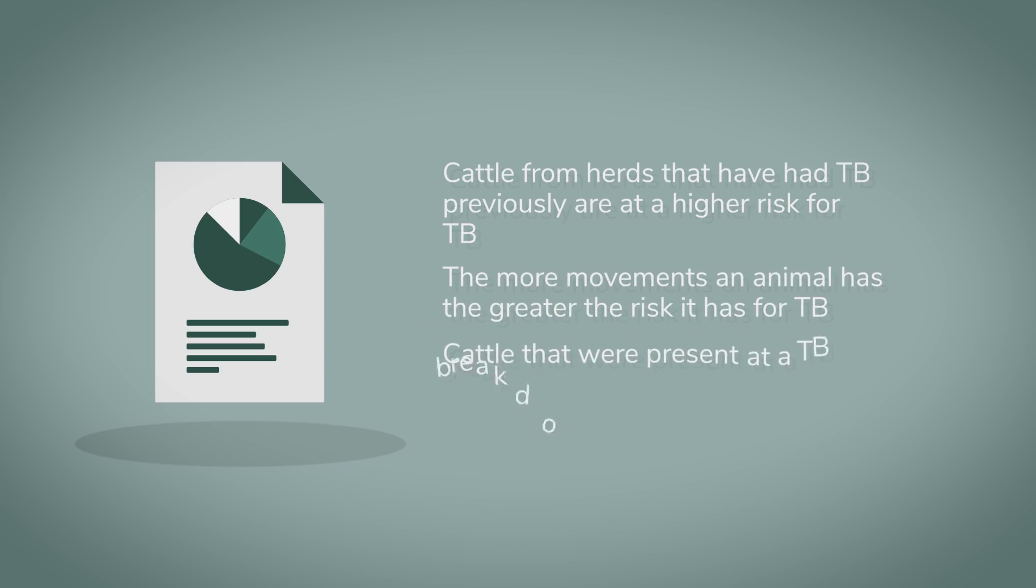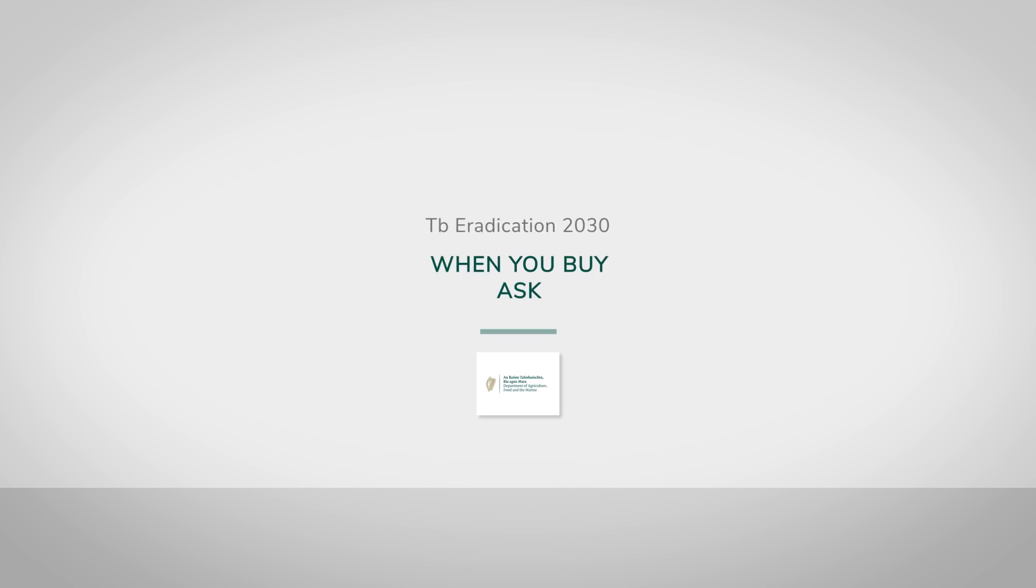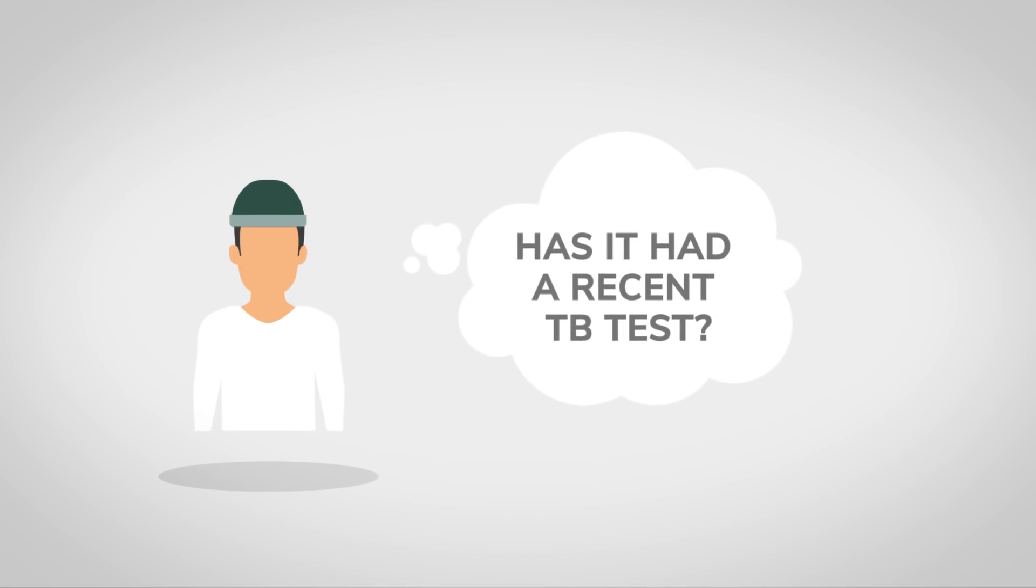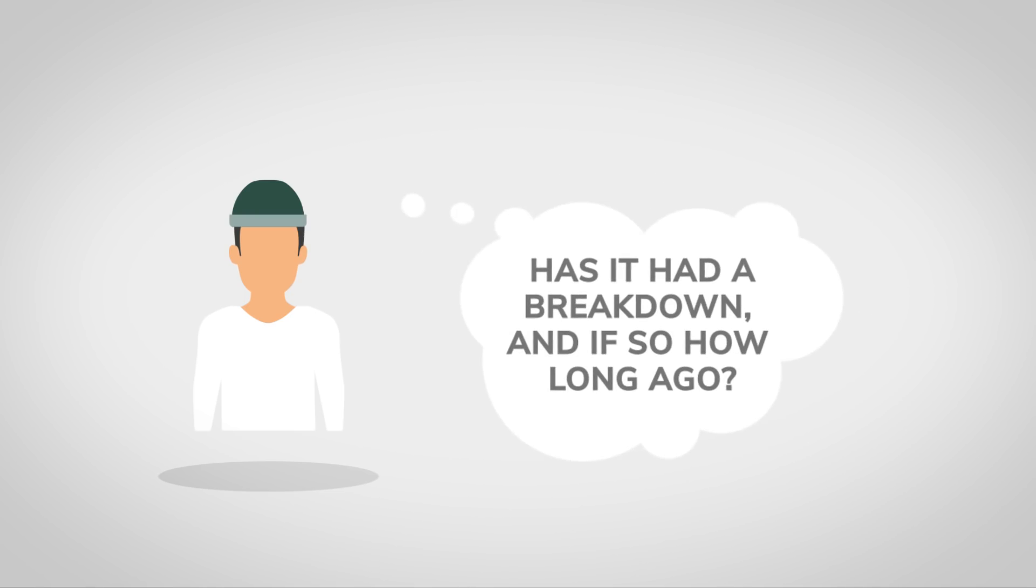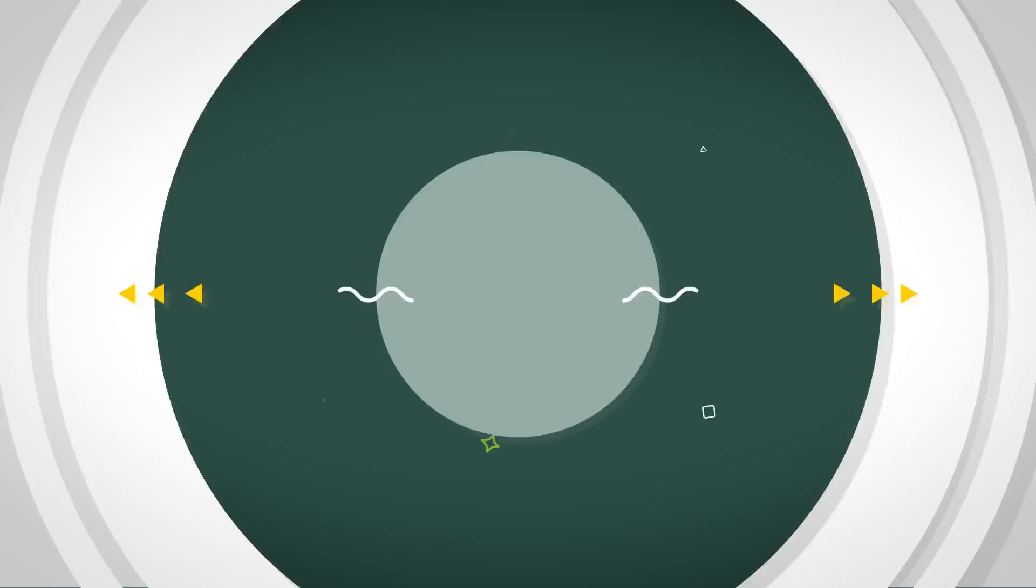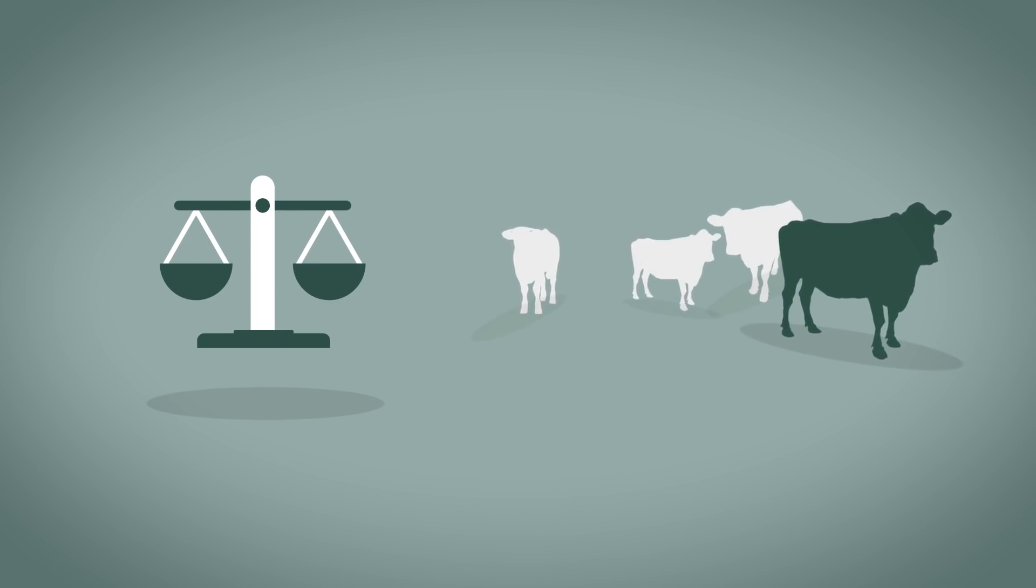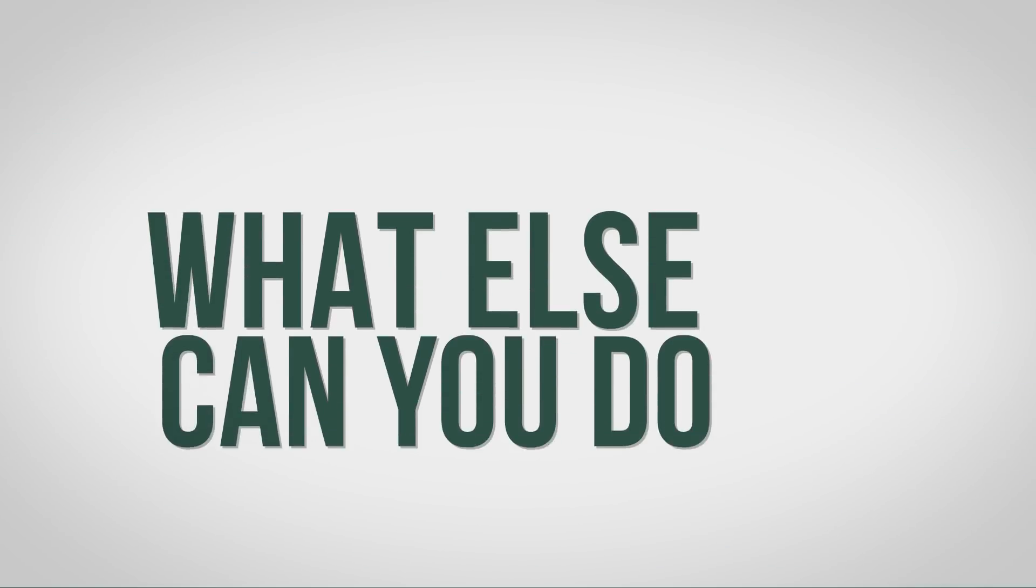And cattle that were present at a TB breakdown in the past are a higher risk of TB. When you buy, ask. Know the animal you are buying. Has it had a recent TB test? Know the TB history of the herd you are buying from. Has it had a breakdown, and if so, how long ago? It is particularly important to consider this risk where the animals you are buying in might stay in your herd for many years, as a dairy cow, a stock bull, or a suckler cow.